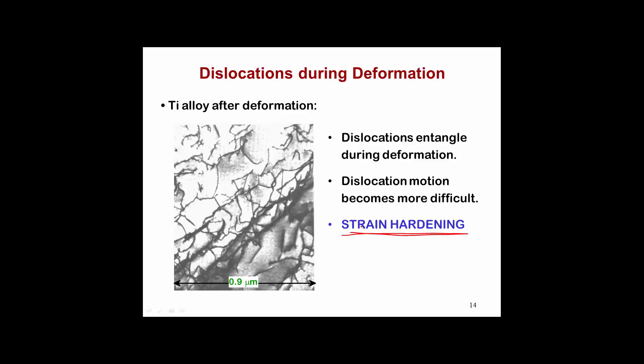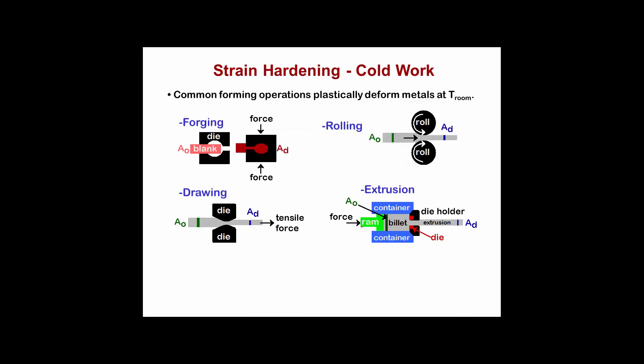One of the important concepts about strain hardening and this dislocation slip process is the idea that many of the processes that we use to shape metals are done at room temperature, at least not far from room temperature. That particular temperature issue is an important one.